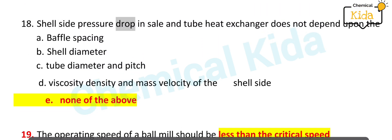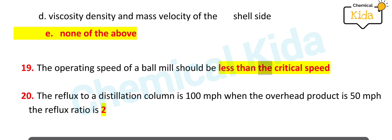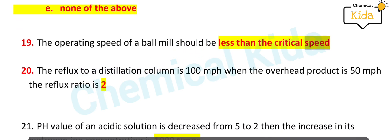Shell side pressure drop in shell and tube heat exchanger does not depend upon the heat exchanger baffle spacing, shell diameter, tube diameter and pitch, viscosity density and mass velocity of the shell side. The operating speed of a ball mill should be less than the critical speed.